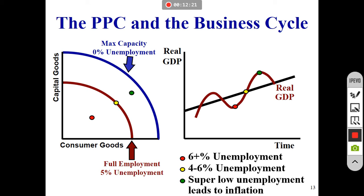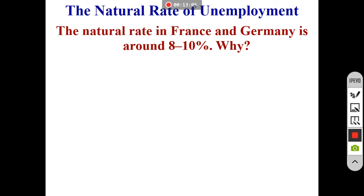On the business cycle graph, when we're down in the trough we have very high unemployment. At the intersection of the full employment line we have our natural rate — where we want to be. At the peak, unemployment is very low. Before COVID we were at the peak with about three percent unemployment, and now we've dropped quite significantly, so the business cycle is happening in front of your eyes.